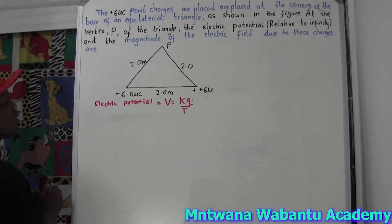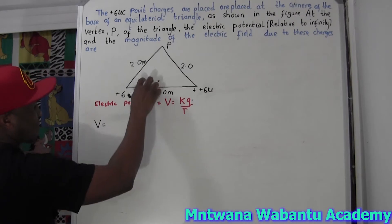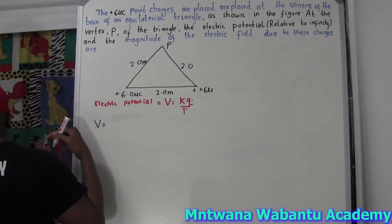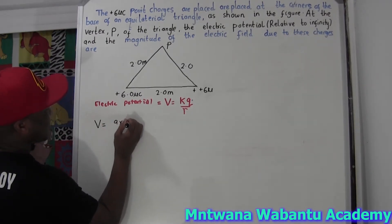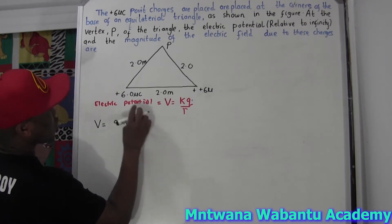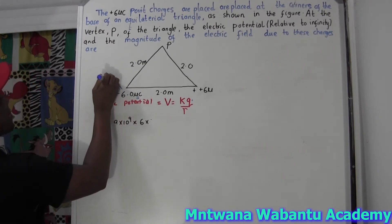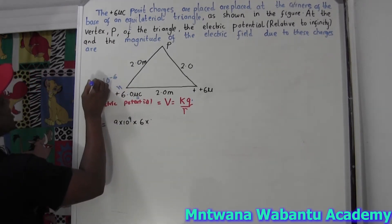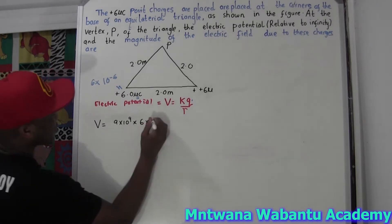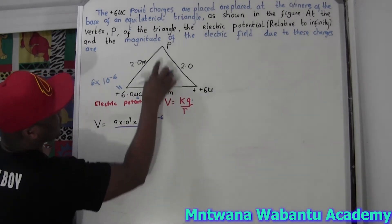Now let's set up the calculation. From P to this first point, the electric potential equals k times the charge. k equals 9×10⁹. The first charge is 6 microcoulombs, so you must convert to coulombs by multiplying by 10⁻⁶, giving 6×10⁻⁶ coulombs. The distance from here to here equals 2.